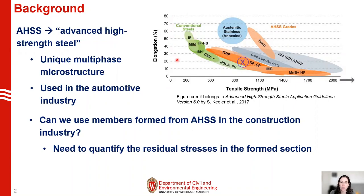This chart here shows available steel specimens for elongation versus tensile strength. Conventional steels are here in green — high elongation but lower strength. Our specimen is shown here in purple. We are testing a DP580. You can see it's one of the second generation AHSS materials. In the gray here we have our third generation. You see overall higher tensile strength but also lower elongation.